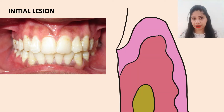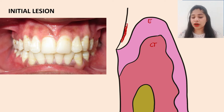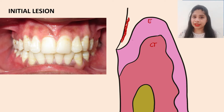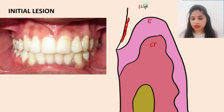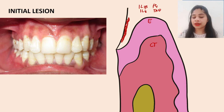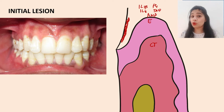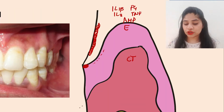Moving to the histopathological aspect of Stage 1 — regarding the epithelium: plaque is present for two to four days, and the microorganisms release byproducts. In defense, the epithelium releases pro-inflammatory cytokines such as interleukin-1 beta, interleukin-8, prostaglandins, and tumor necrosis factors. Additionally, antimicrobial peptides are also released by the epithelium.